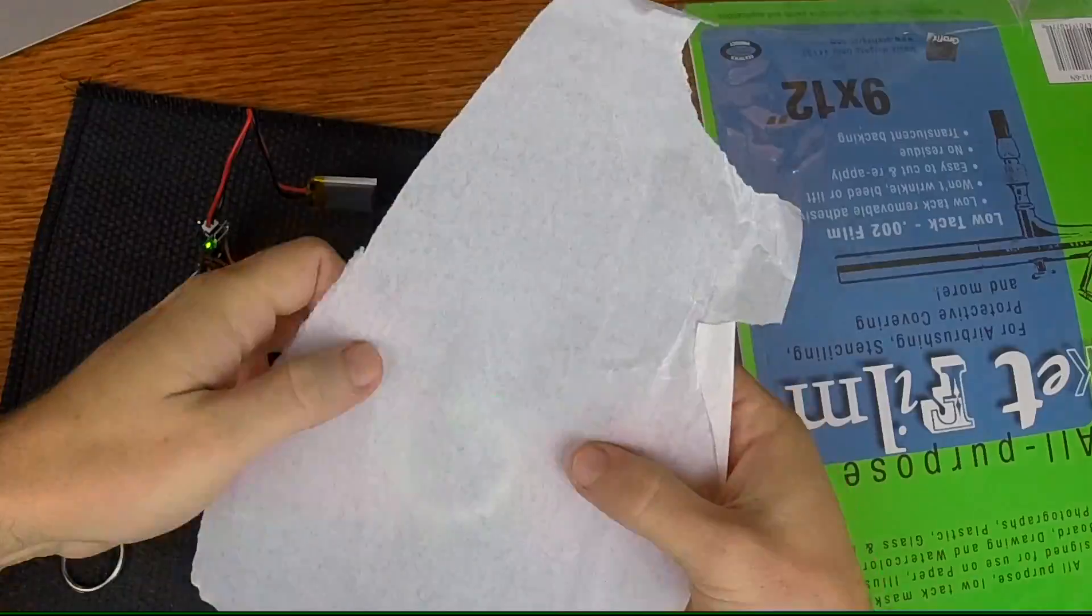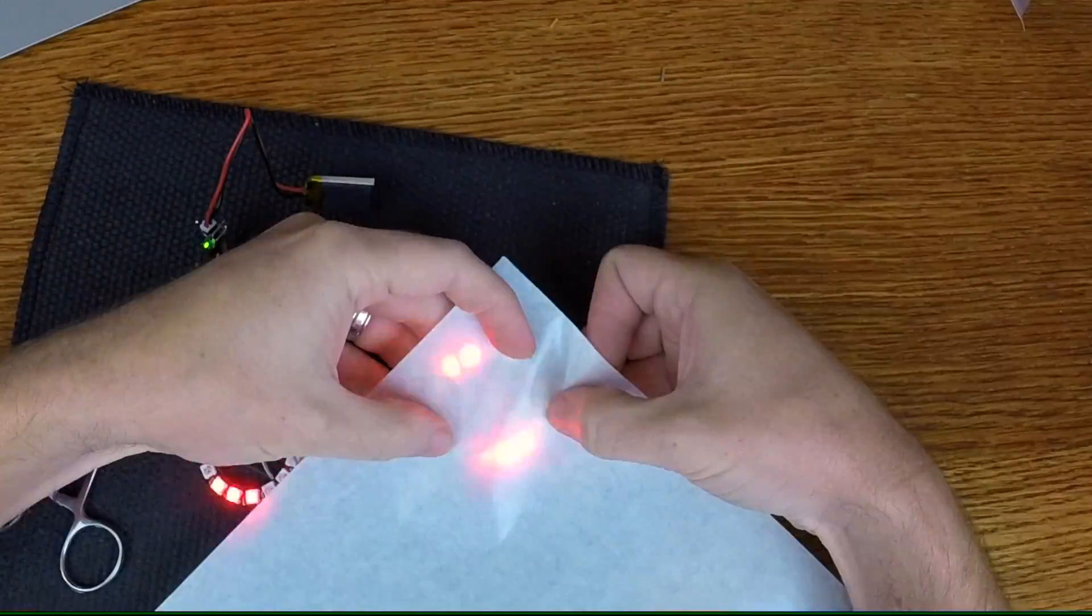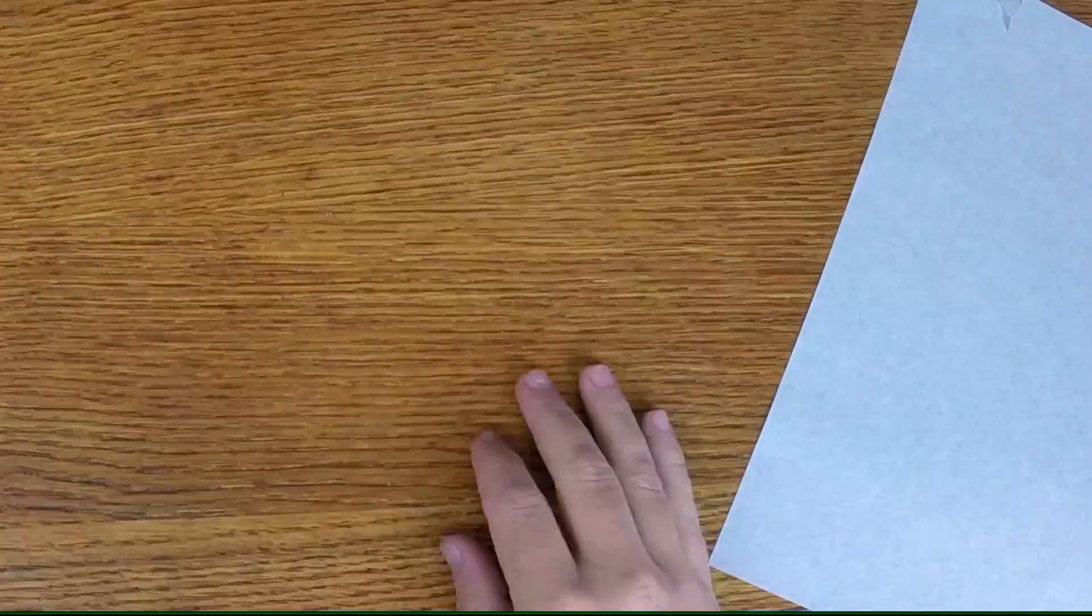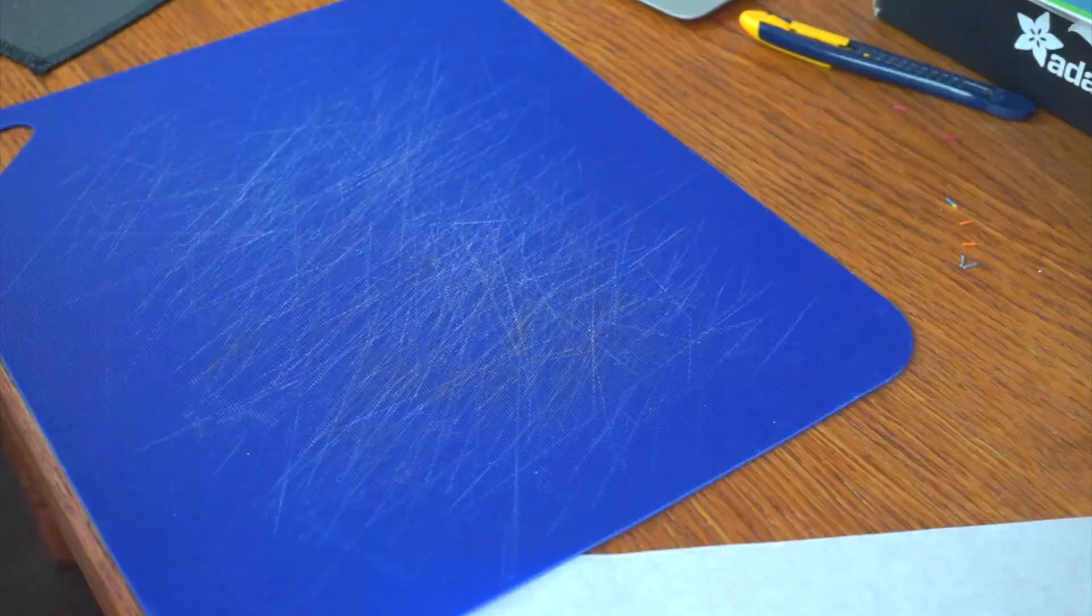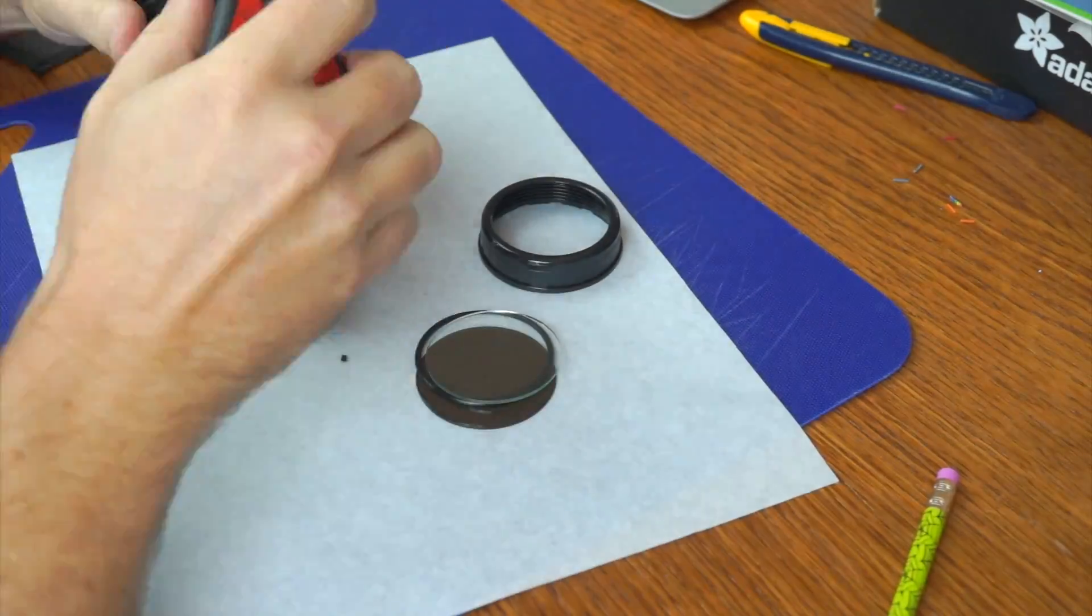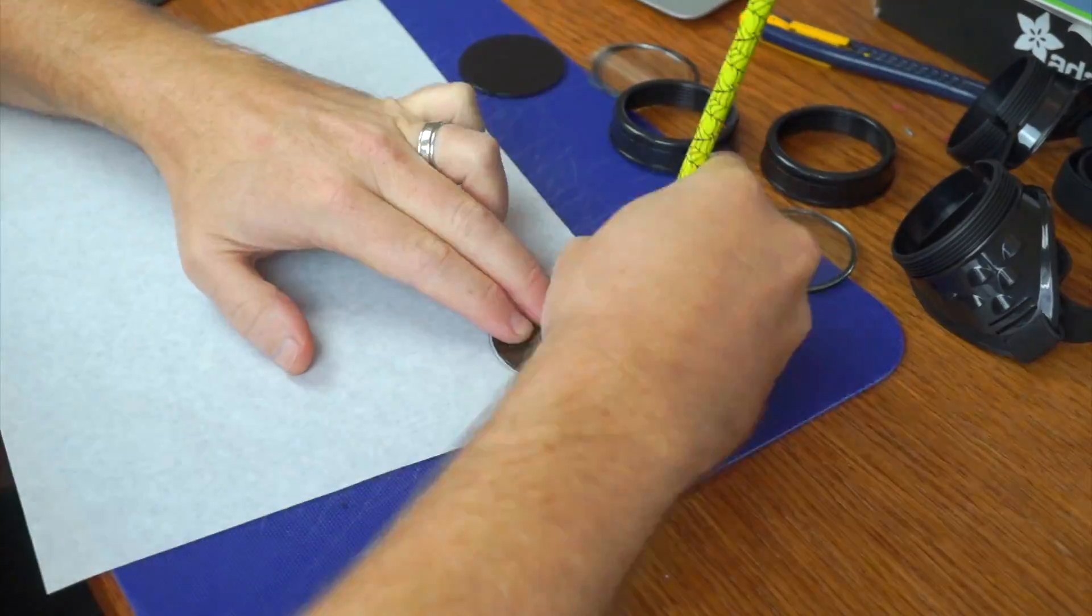Another thing I'm going to do here is I'm going to test out different diffuser materials. I just grabbed these from around the house. Paper, plastic. What I wound up going with was this stuff called Frisket film that I had handy, which is kind of like a plastic-backed paper that did a pretty good job of diffusing the LEDs.